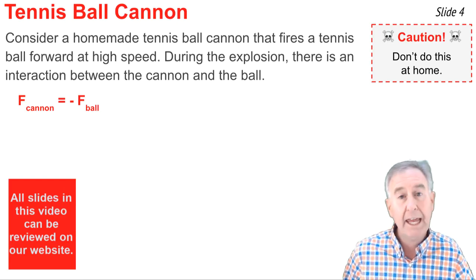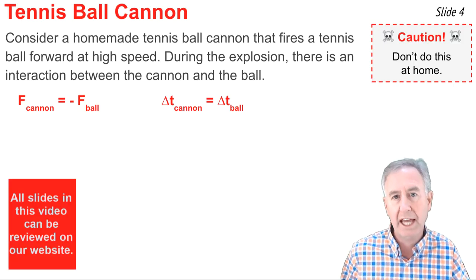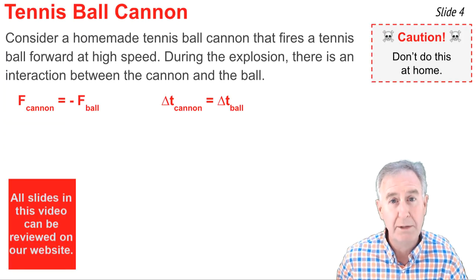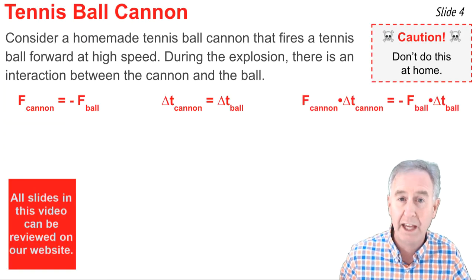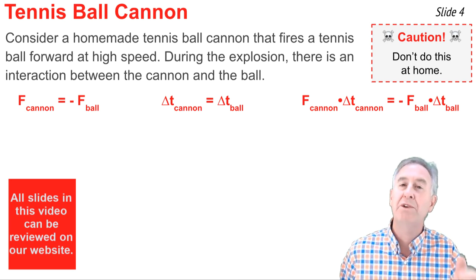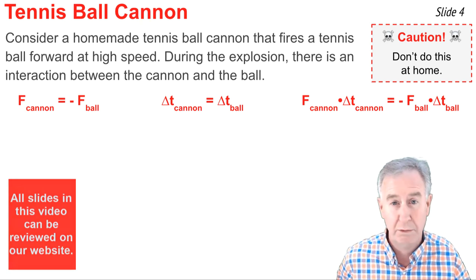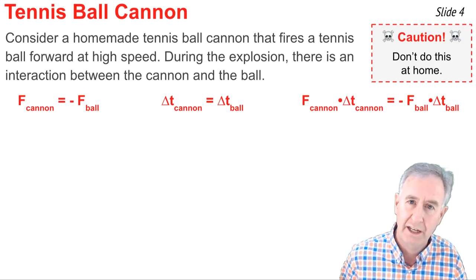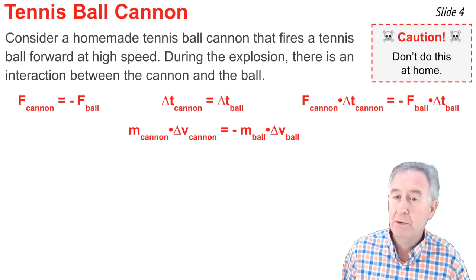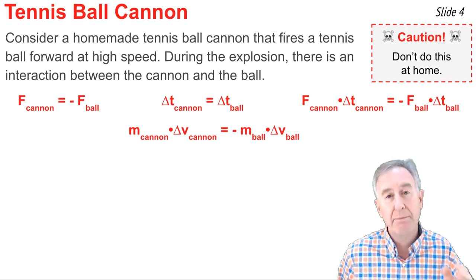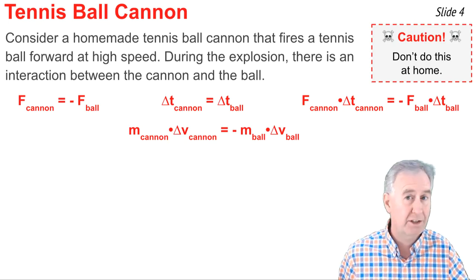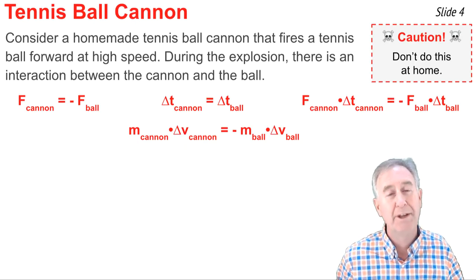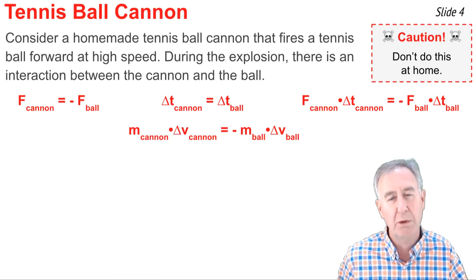These forces act on the cannon and the ball for the same amount of time, so it follows mathematically that the force on the cannon multiplied by the time over which it acts equals the negative of the force on the ball times its time. In other words, the impulse on the ball equals the opposite of the impulse on the cannon. Since impulse equals momentum change, the momentum change of the cannon is equal and opposite to the momentum change of the ball.